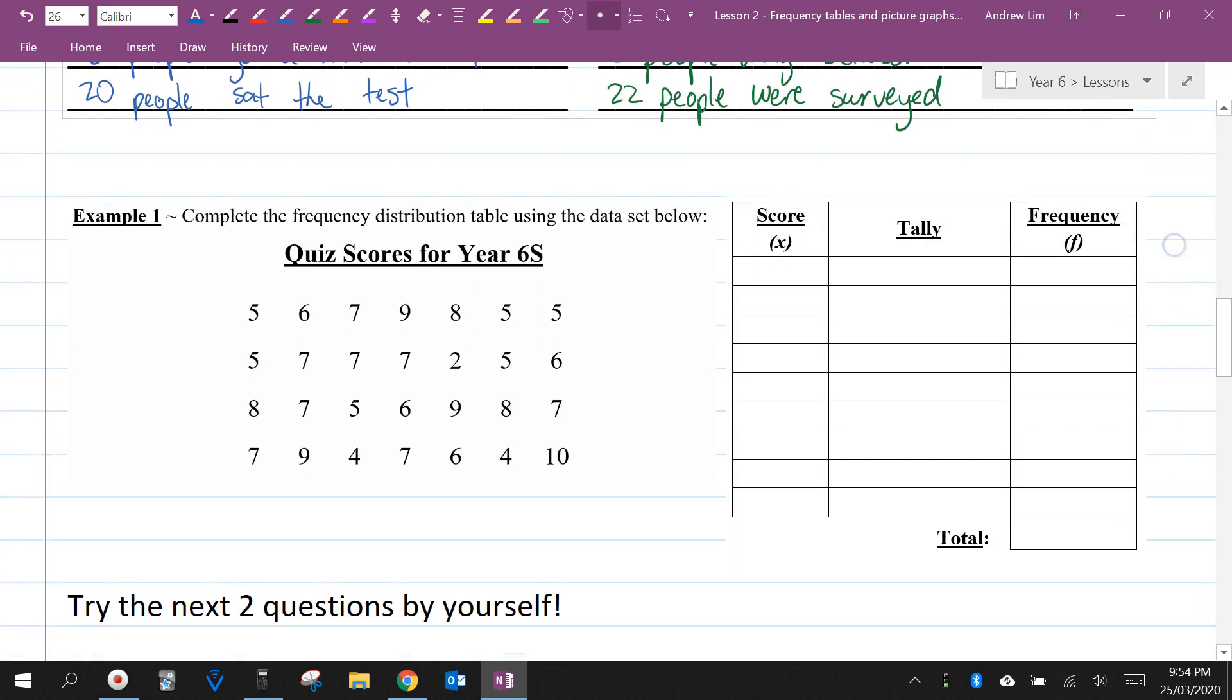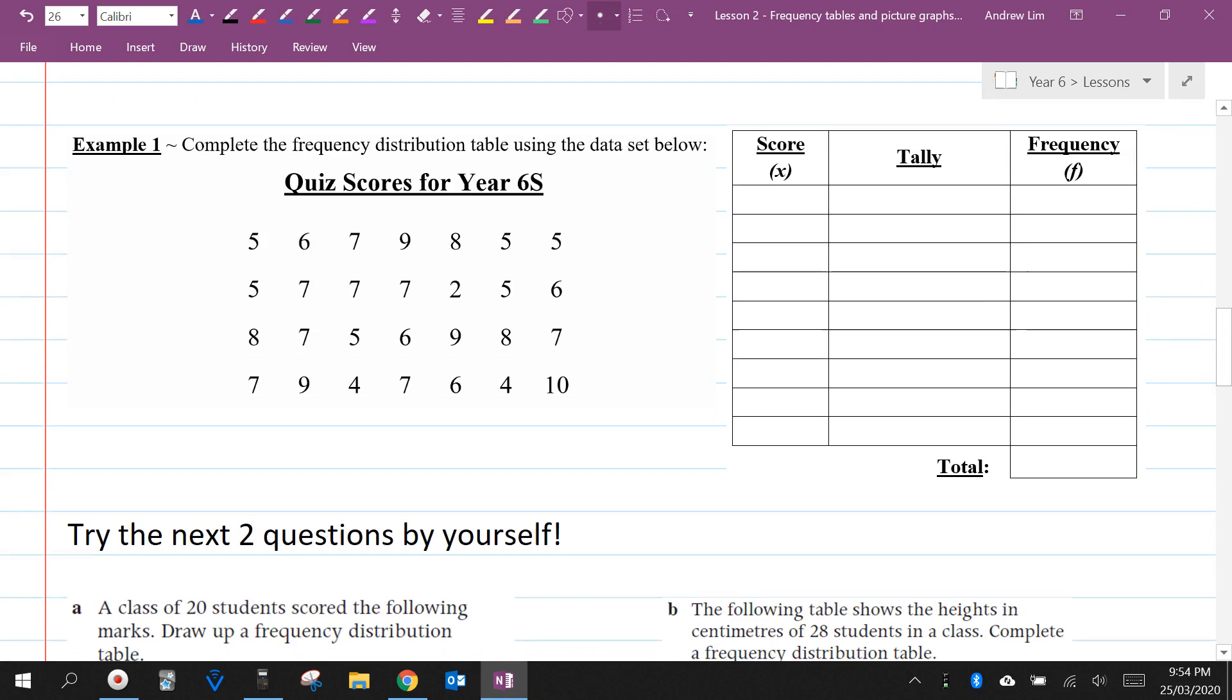So let's have a look at how to construct a frequency table. And I want you to pause the video and have a go with two questions yourself. So here we've got the quiz scores for year 6s. When we construct this frequency table, the first thing I would do is look for the smallest and largest scores. Here I see that the smallest score is 2 and the largest score is 10. Which means I'm going to start at 2 and I'm going to go all the way up to 10.